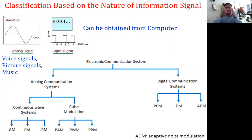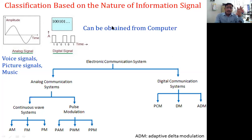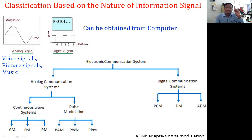Analog signals vary continuously with time. The amplitude of the analog signal varies continuously with time. This is a sinusoidal signal — for example, you see here the amplitude of this signal varies continuously with time, completing a cycle. The amplitude of the information signal varies continuously with time. Such a signal is called an analog signal.